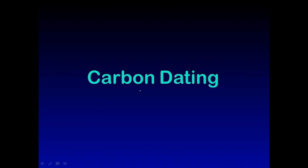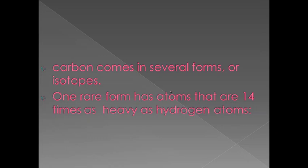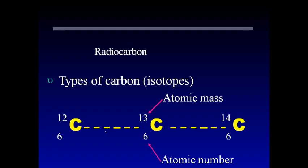Hello friends, in today's video let us learn about an application of radioactivity which is carbon dating. Let us first go through the basics of radioactivity in order to understand more about carbon dating. Carbon comes in several forms or isotopes: C-12, C-13, C-14, etc. are isotopes of carbon. C-14 is a very rare form of carbon and it is 14 times as heavy as hydrogen atoms.